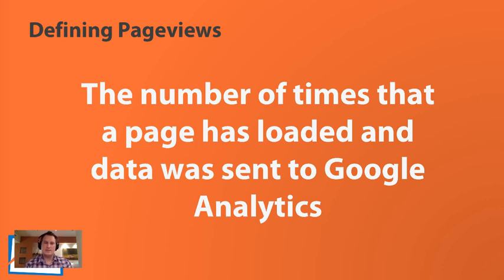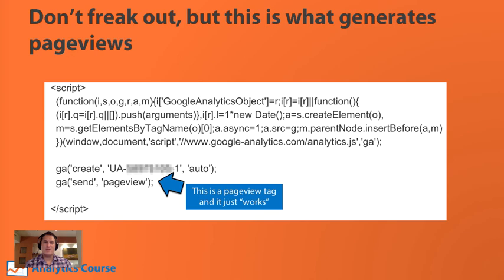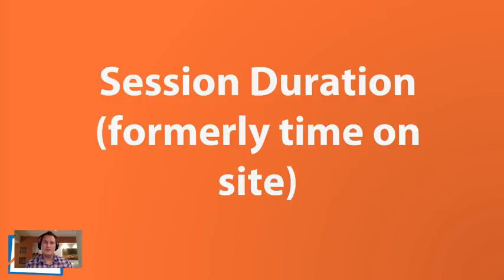Page views are basically the number of times that a page was loaded and data was sent to Google Analytics. The second part of the tracking code says 'tell Google Analytics that somebody viewed a page on our website.' Every time your page finishes loading, a page view is sent to Google Analytics, and that's how we know how people visited our website and where they went.